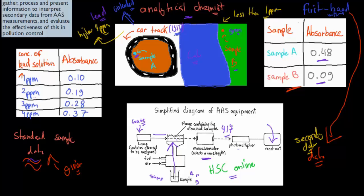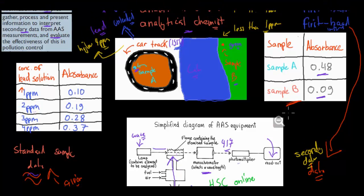The reason why I mention all this is because the dot point itself says gather, process, and present information to interpret secondary data from AAS measurements and evaluate the effectiveness of this in pollution control. We've also got to evaluate the effectiveness of this in pollution control. This would be the example. This is our second-hand data, someone else gave it to us, and we've got to figure out is there pollution happening. There's so many HSC exam questions that are very similar to this. You have a bunch of data given, you need to figure out maybe roughly how much pollution there is, or just if there's more pollution at one place than another.